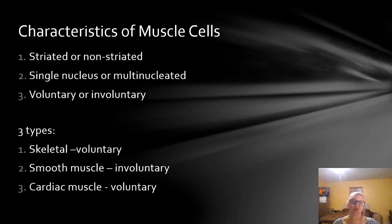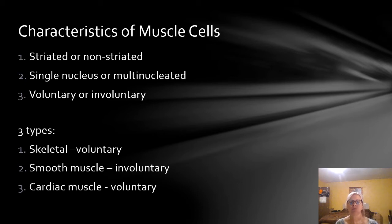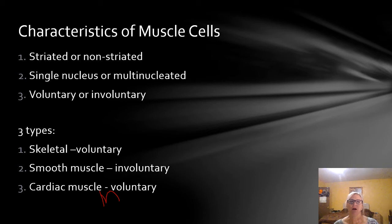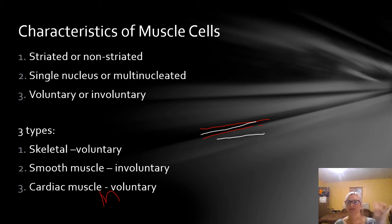We have three types of muscle cells. Skeletal muscle is under voluntary control — this is what you typically think of when you say the word muscle: quadriceps, gluteus maximus, biceps, and triceps. Then we have smooth muscle, which is involuntary and found in places like the intestine. And cardiac muscle, which is also involuntary. They're either going to be striated — meaning alternating shades or bands — or non-striated. They can have a single nucleus or be multinucleated, and they'll be either voluntary or involuntary.